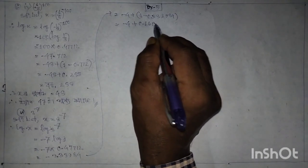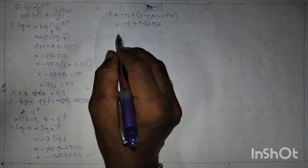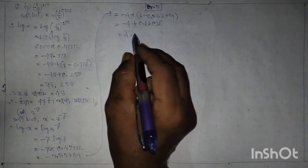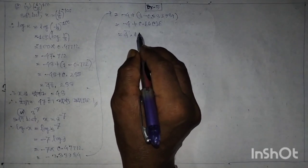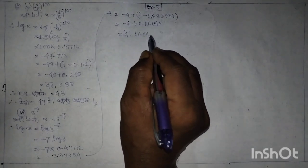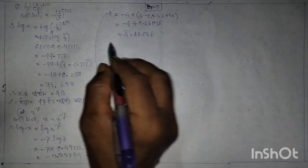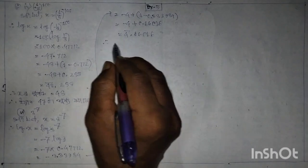Therefore log x equals 4̄.6601, with characteristic minus 4 and mantissa 0.6601.